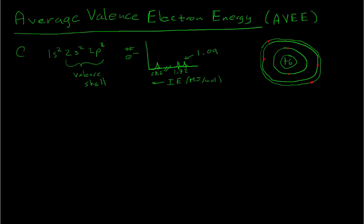Ionization is an important property of atoms — it measures how hard or easy it is to pull one electron off of an atom. It turns out it might be nice to have a measure of the average strength with which an atom holds on to its valence electrons. We care about valence electrons because they're on the outside of the atom, so if two atoms are going to interact to form a bond, that happens on the outside — it's the valence electrons that we care about, and how tightly a particular atom holds on to any electrons in its valence shell.